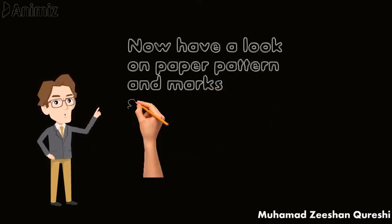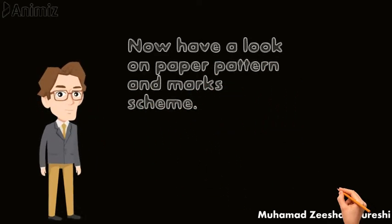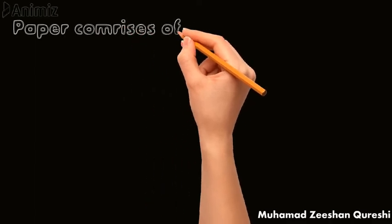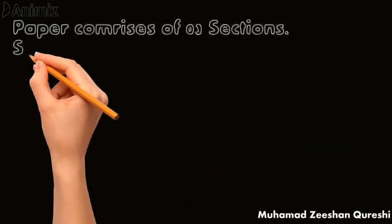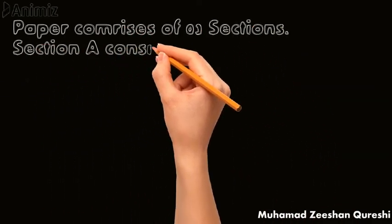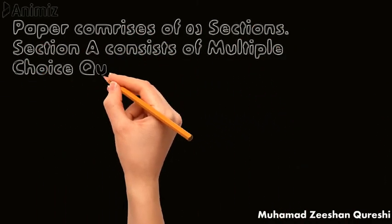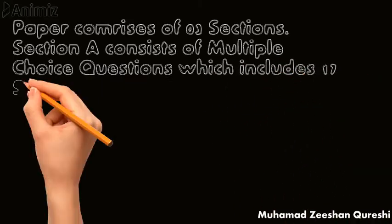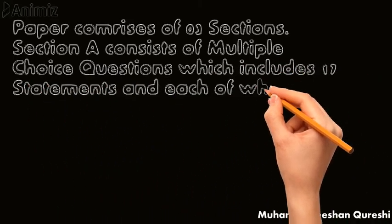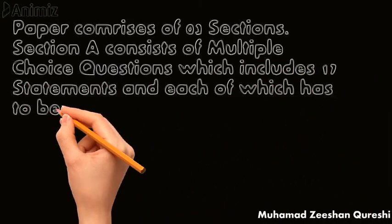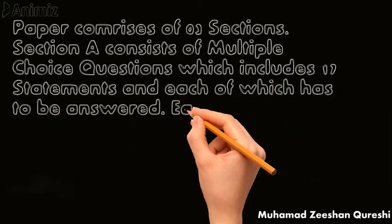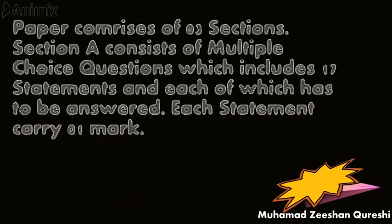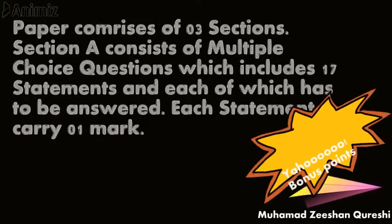Now have a look at the paper pattern and mark scheme. According to the Board of Secondary Education Karachi, the paper comprises three sections. Section A consists of multiple choice questions which include 17 statements, each of which must be answered. Each statement carries one mark.